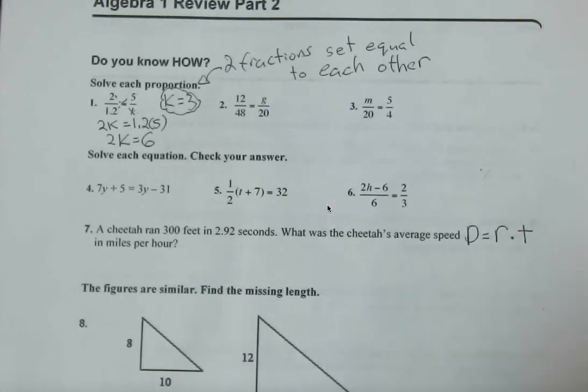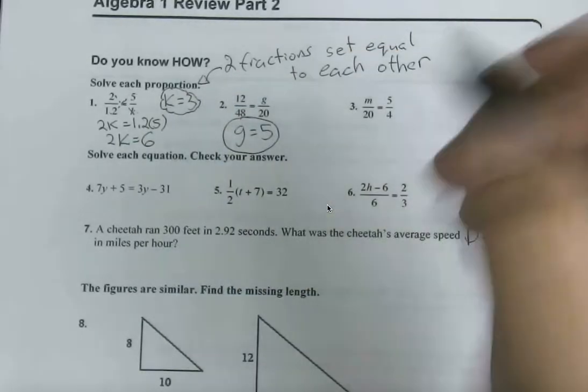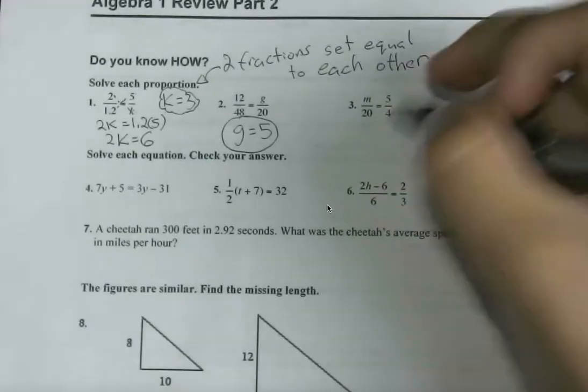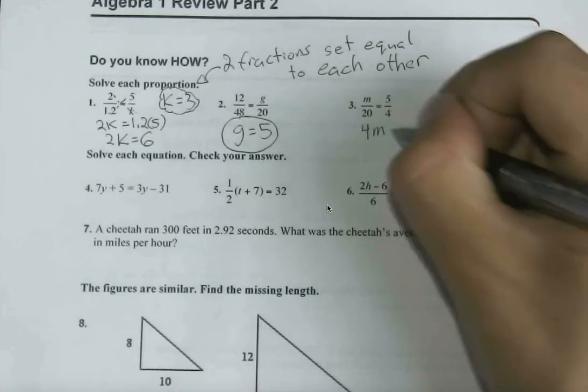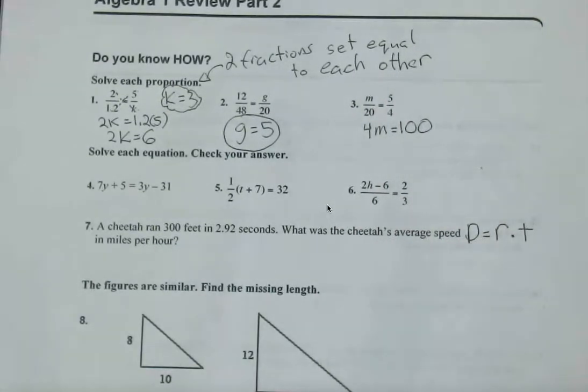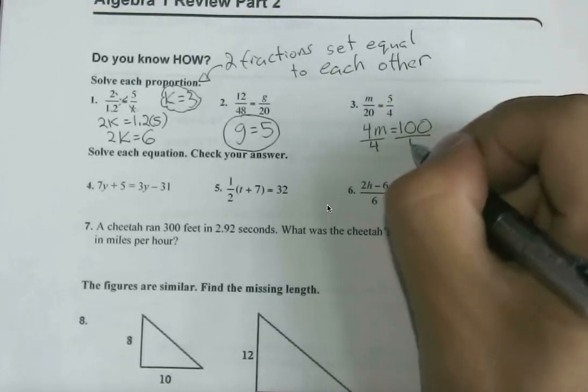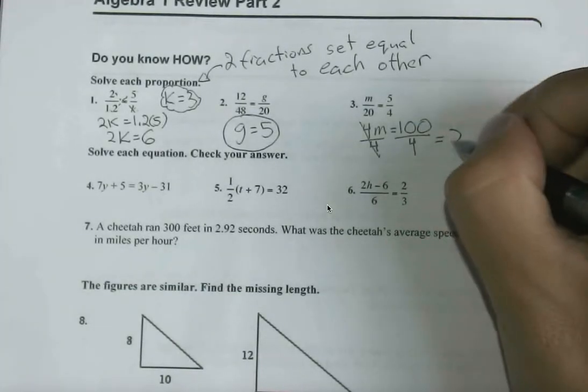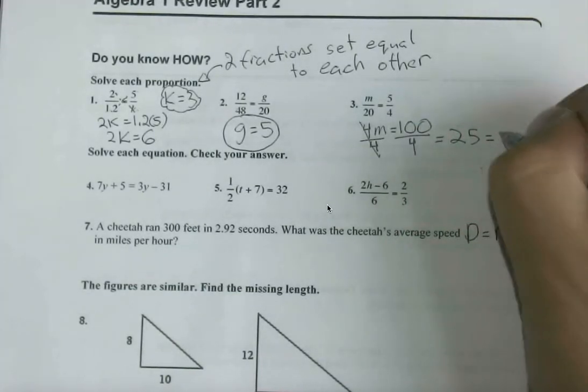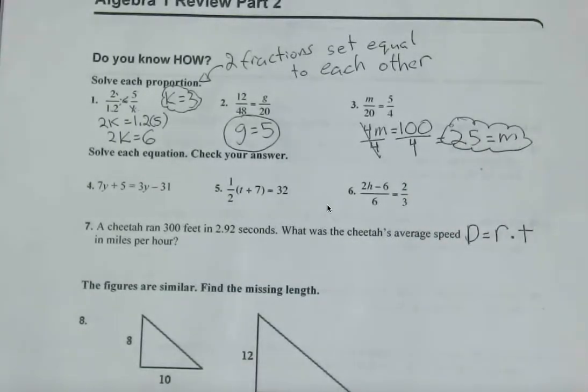You should be saying that, in this case, g equals 5, and in this case, if we cross multiply, we have 4m equals how we want to keep it. So we keep it 100. If we divide by 4 on both sides, m equals 25. And again, we can always plug our work back in and check it.